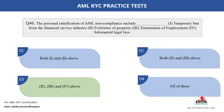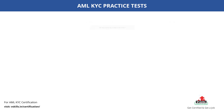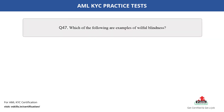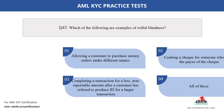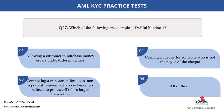Question number 47. Which of the following are examples of willful blindness? The options are: A. Allowing a customer to purchase money orders under different names; B. Cashing a check for someone who is not the payee of a check; C. Completing a transaction for a lesser, non-reportable amount after a customer has refused to produce ID for a larger transaction; D. All of these. The correct answer is option D.